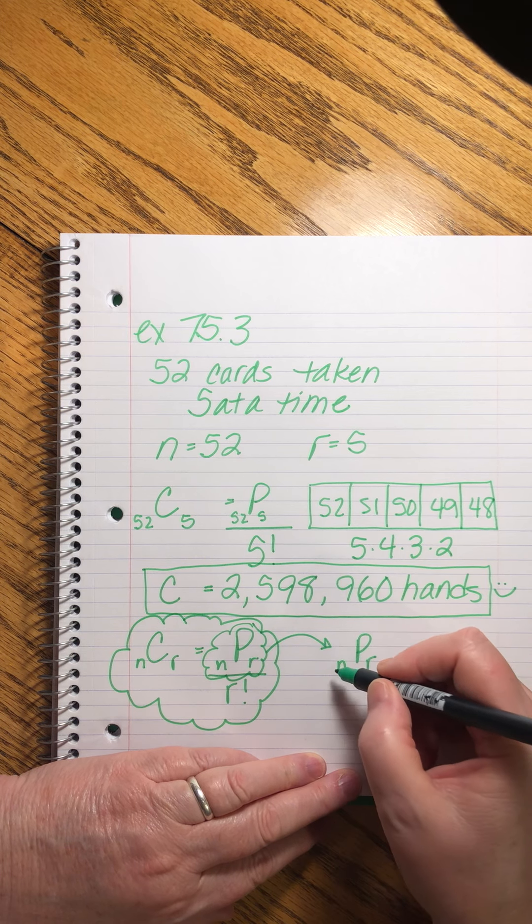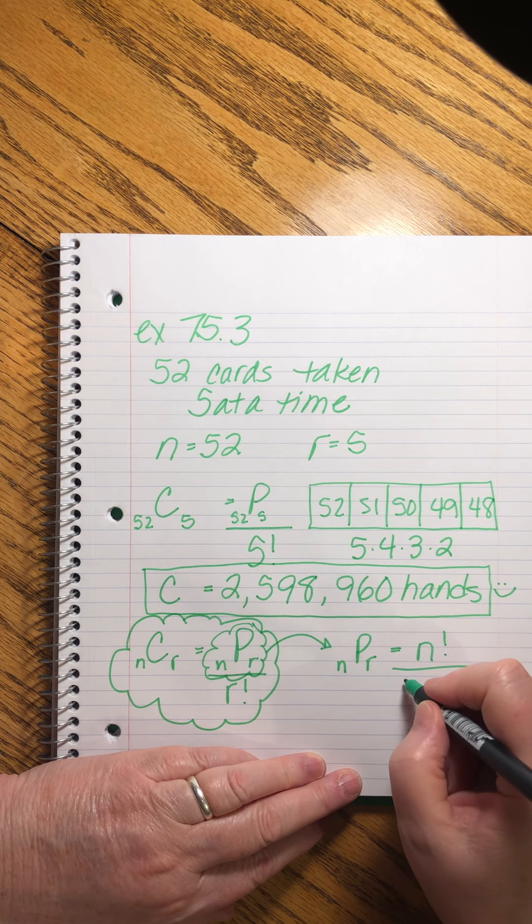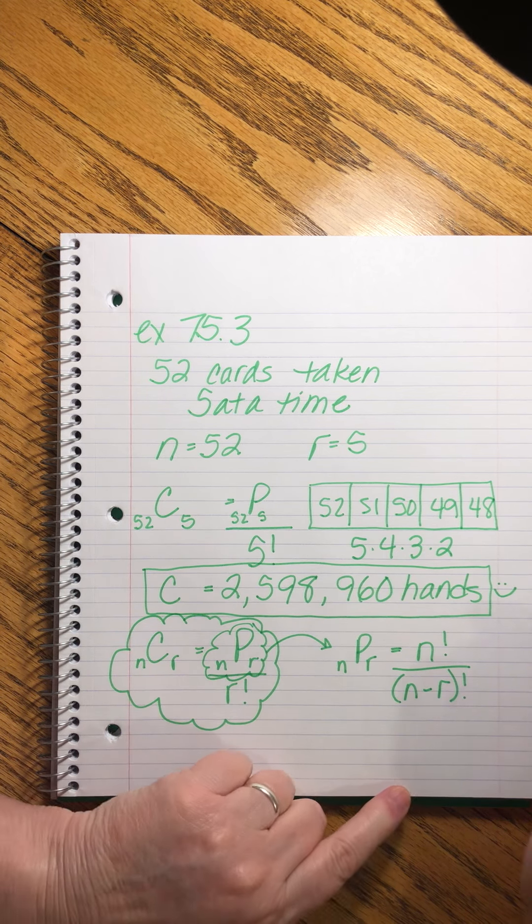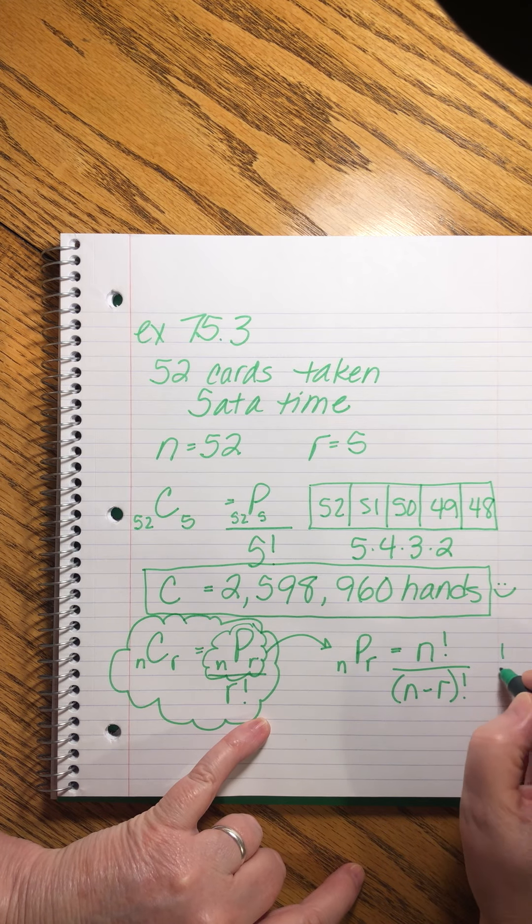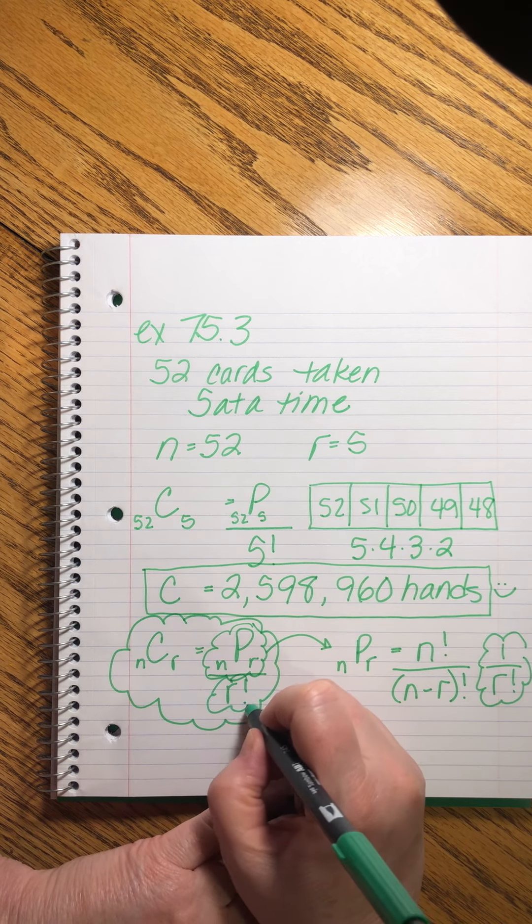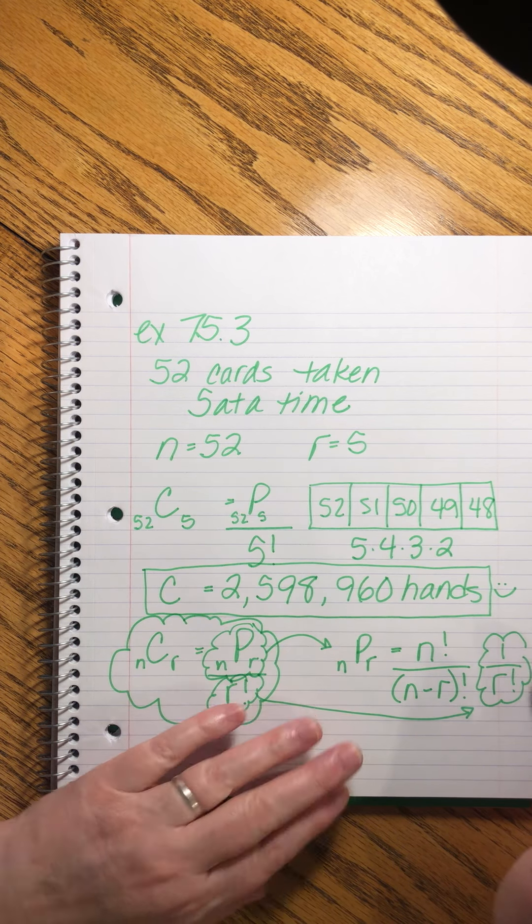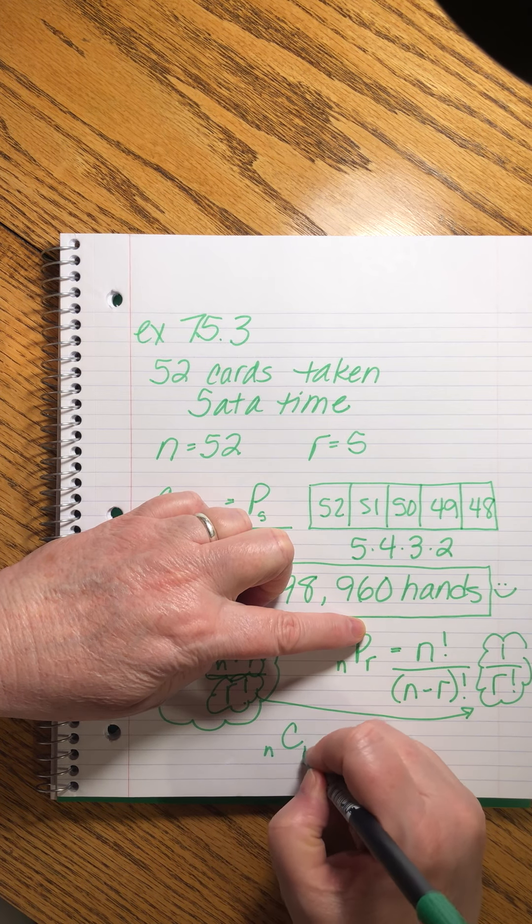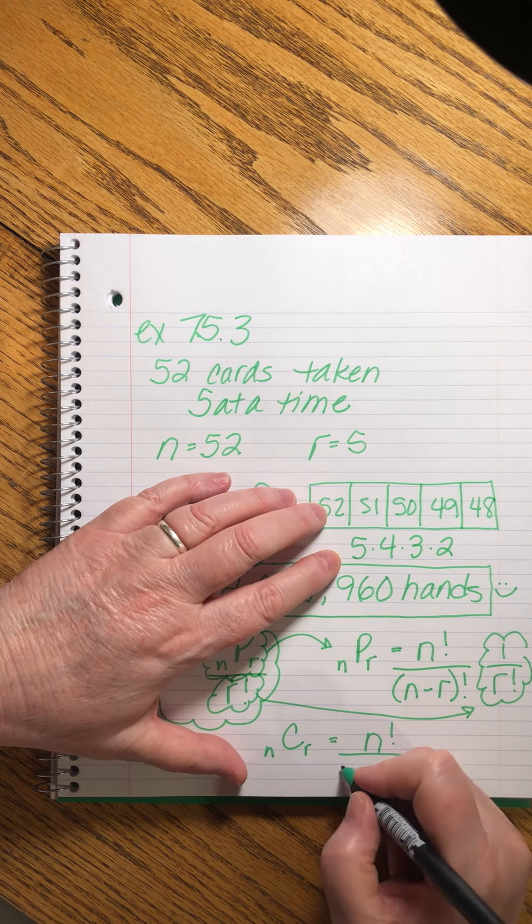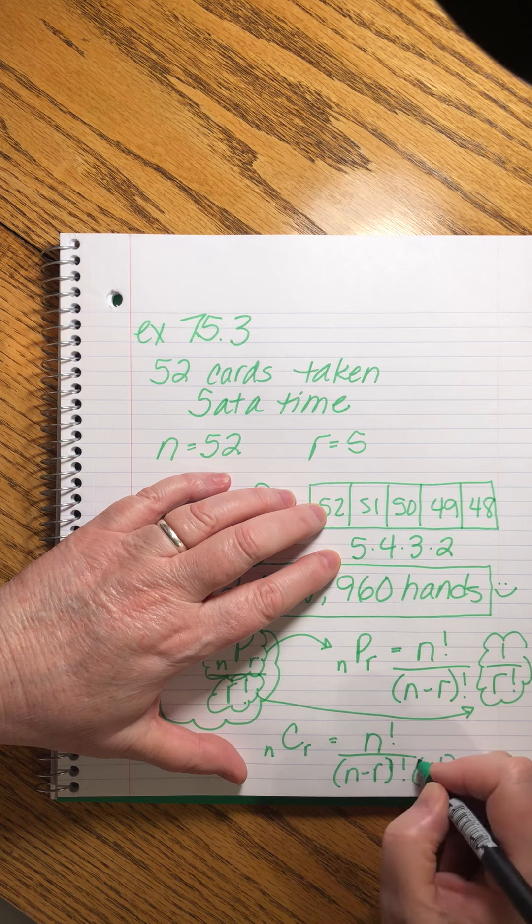But now we're saying divide it also by r factorial. So we can add that in. It's this piece of it. So if we want, we can say that the combination of n things taken r at a time equals, and then we can use this whole thing as our formula: n! / ((n-r)! × r!).